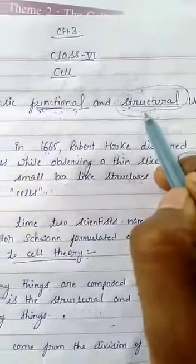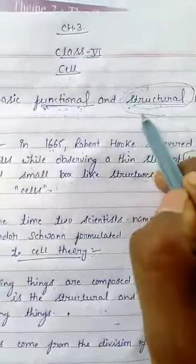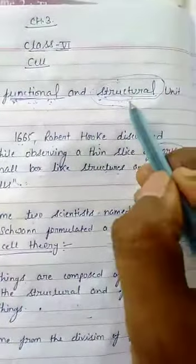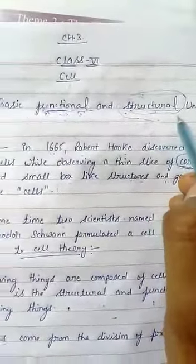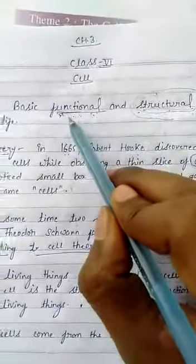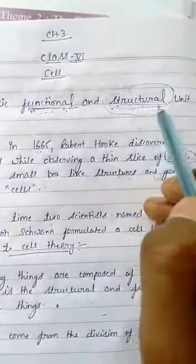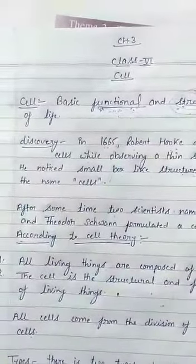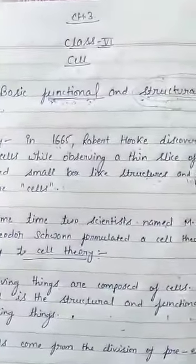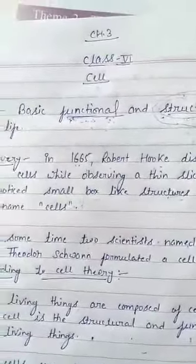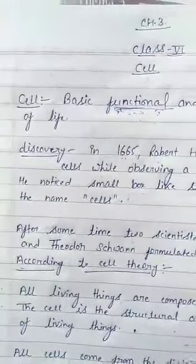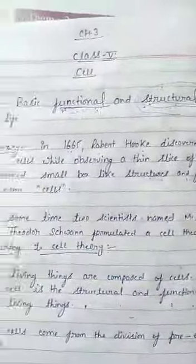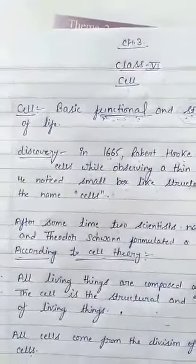And structural means how we look — how a plant looks, how a human being looks. So this is structural. That is why cell is known as a basic, functional and structural unit of life. How any organism looks, how it does its work — that totally depends on the cell.